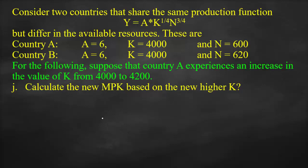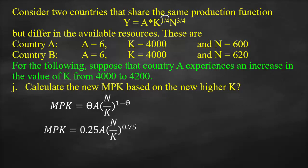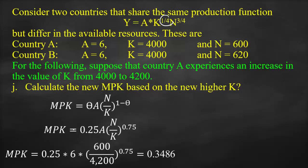To calculate the new MPK with the higher capital, we use: MPK = θ × A × (N/K)^(1-θ) = 0.25 × 6 × (600/4200)^0.75. This gives a new MPK of 0.3486, which is lower than before (0.3615). This is because we increased capital but did not change labor, so by the law of diminishing marginal returns, the productivity of an additional unit of capital is lower.